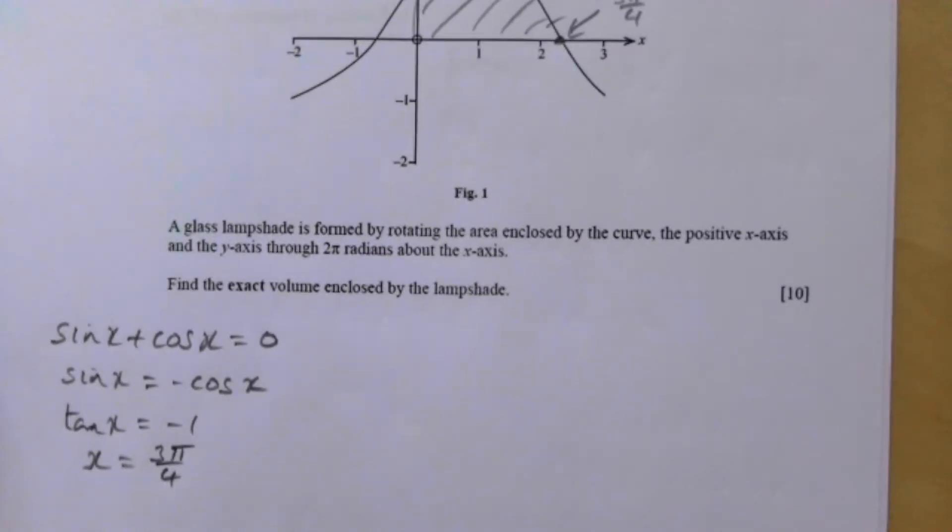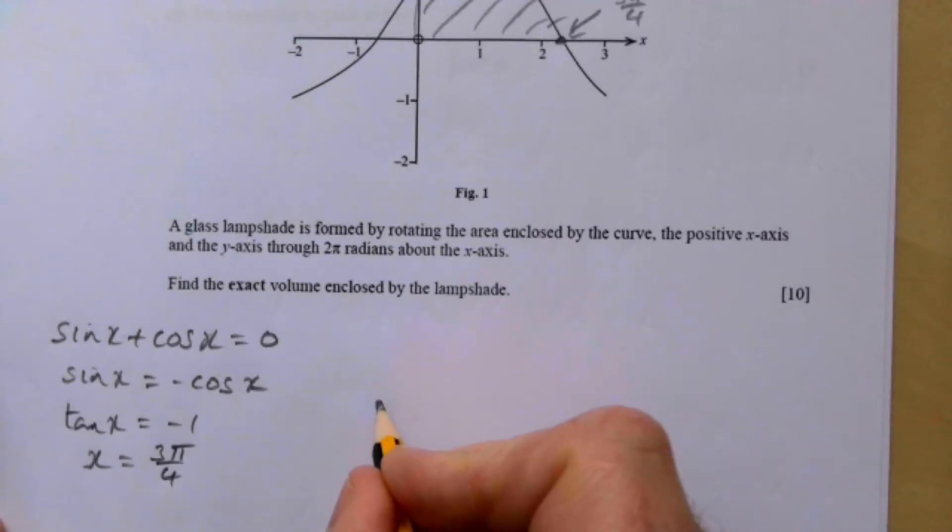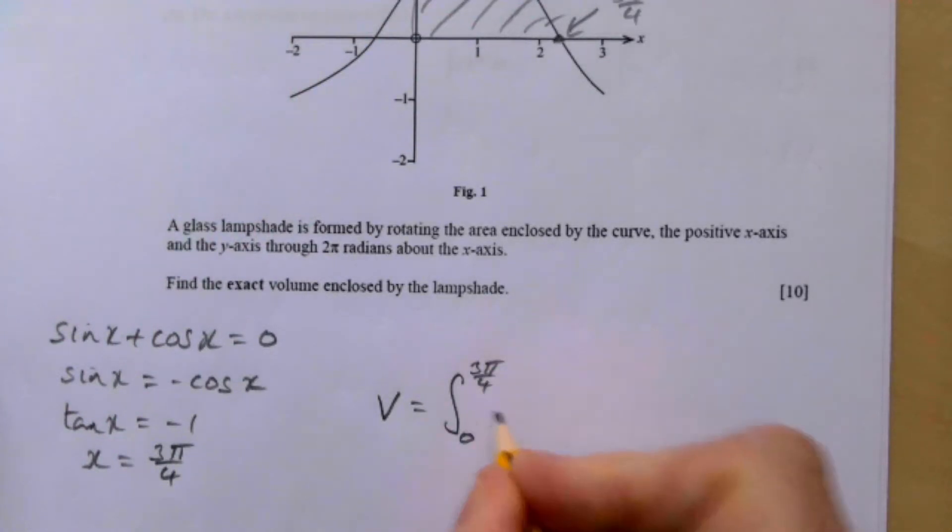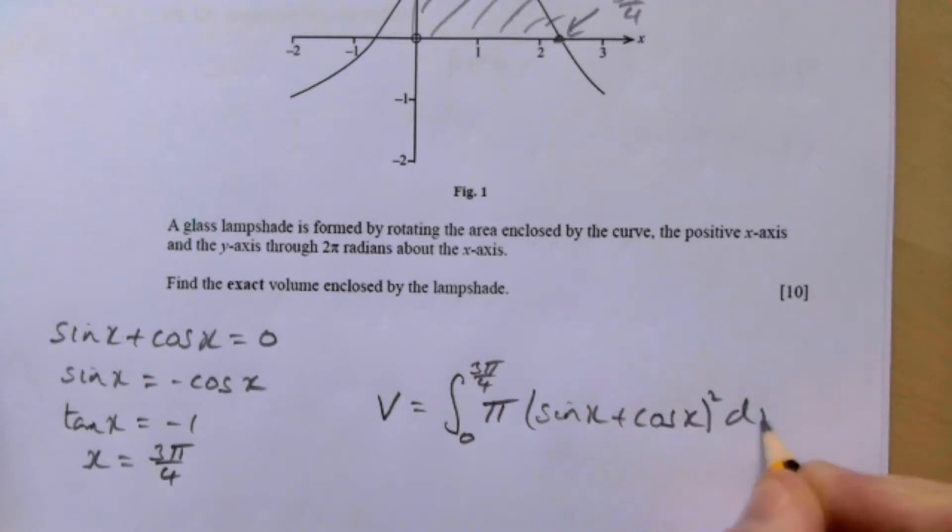So let's try and set it up. As always for a volume, it's going to be the integral between three pi over four and zero of π times the function squared, so it's sine x plus cos x all squared dx.